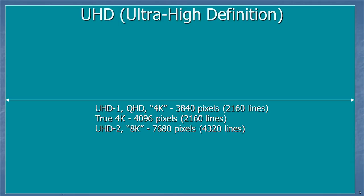In ultra-high definition, we turn everything on its side. UHD1 is sometimes called QHD or Quad High Definition, or sometimes 4K, and that might be 3840 pixels across in 2160 lines, which is twice HD. True 4K is sometimes referred to as 4096 pixels across, again in 2160 lines. And then UHD2, sometimes referred to as 8K, is 7680 pixels across in 4320 lines.